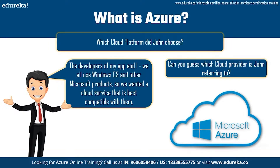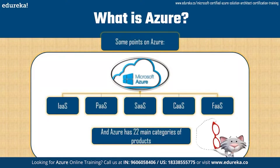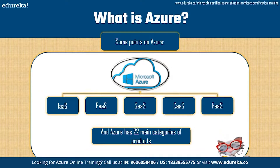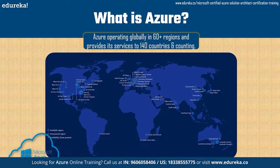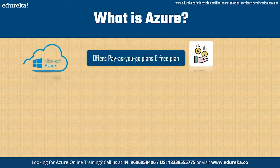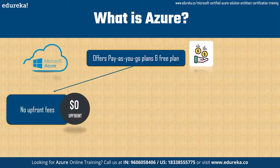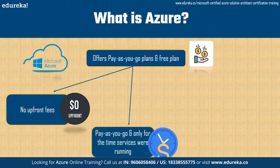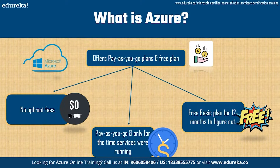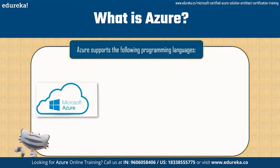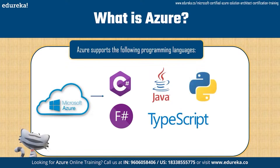Before we talk about the services, here are some interesting things about Azure. Like every other cloud platform, Azure provides five distinct types of services: infrastructure as a service, platform as a service, software as a service, container as a service, and functions as a service. Azure has 22 main categories of products and over 600 services. It operates globally in 60-plus regions and provides services to 140 countries and counting. Azure offers pay-as-you-go plans with no upfront fees, and a free basic plan valid for 12 months. Supported languages include C#, F#, Java, TypeScript, and Python.